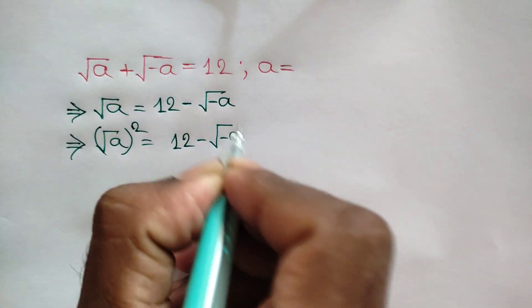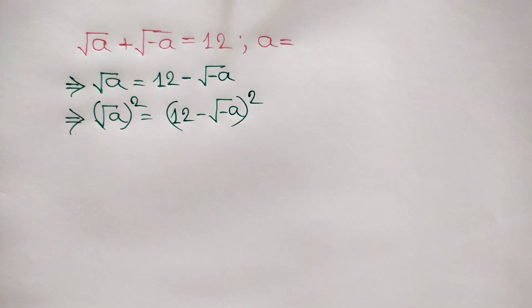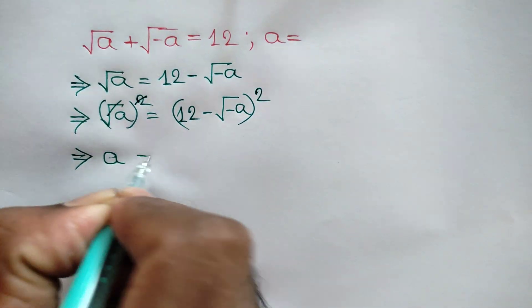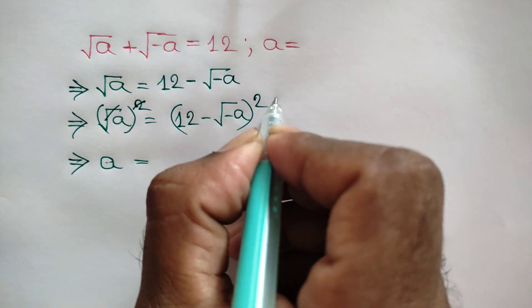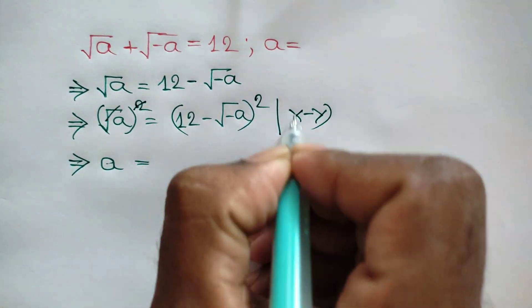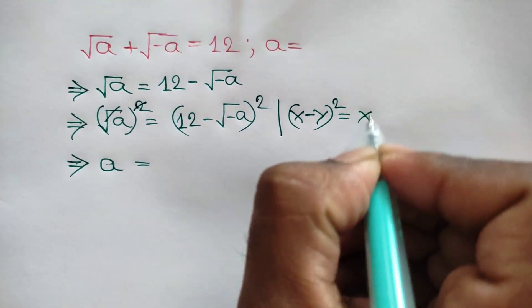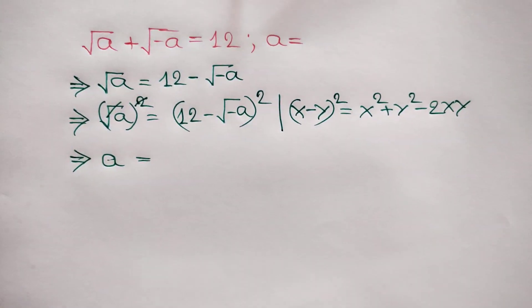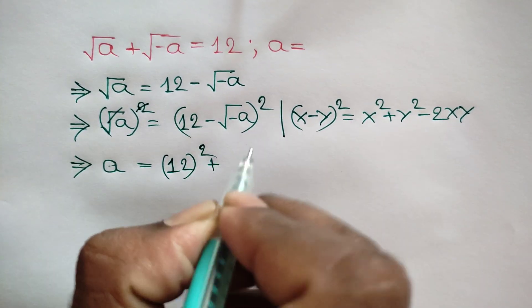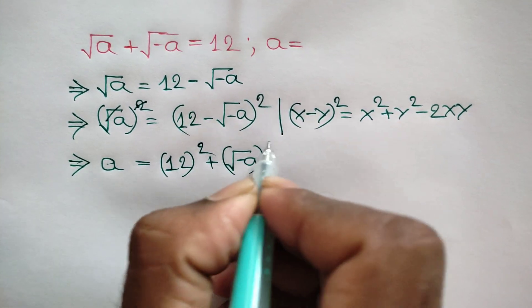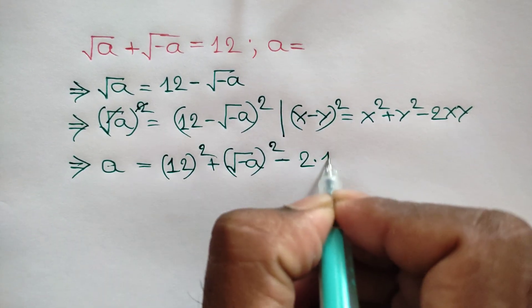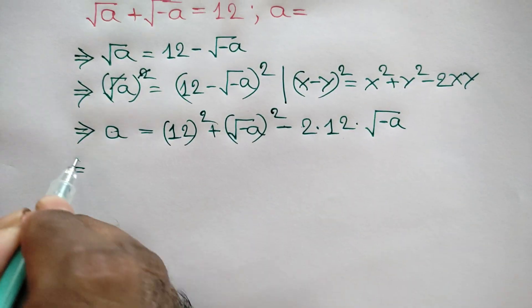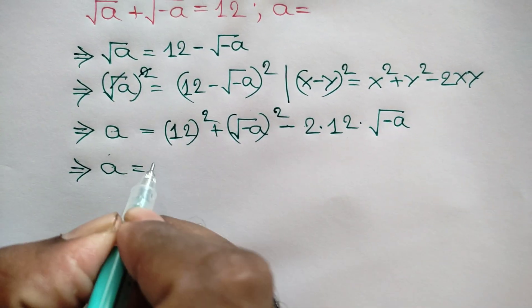The left side simplifies to a. On the right side we apply the algebraic rule: x minus y whole square equals x squared plus y squared minus 2xy. Applying this rule, we get 12 squared plus square root of negative a whole square minus 2 times 12 times square root of negative a. So a equals 12 squared, which is 144.